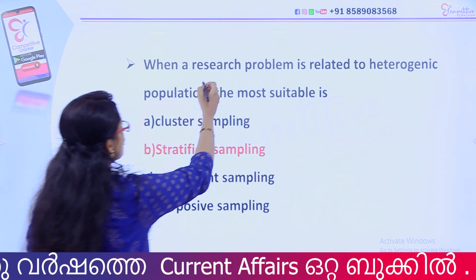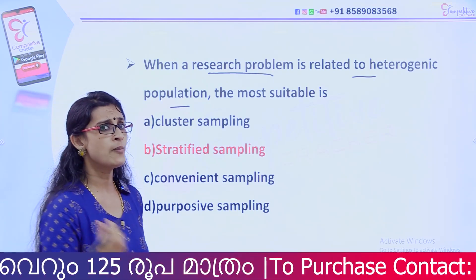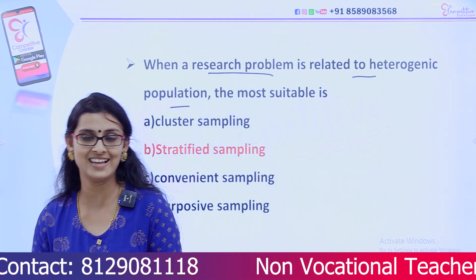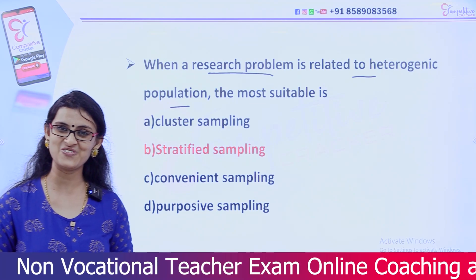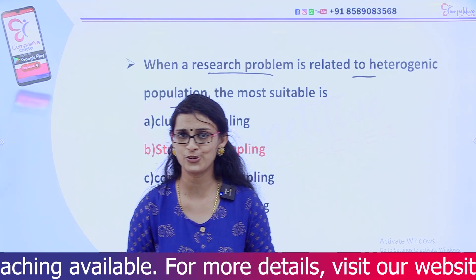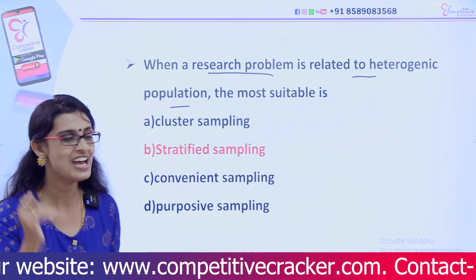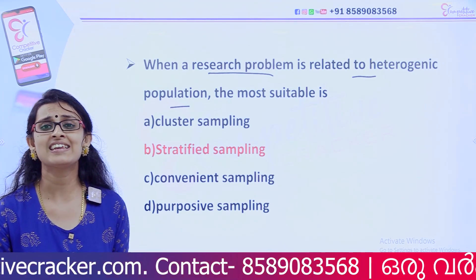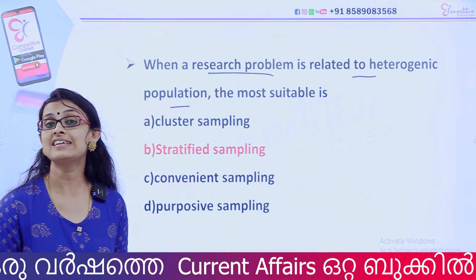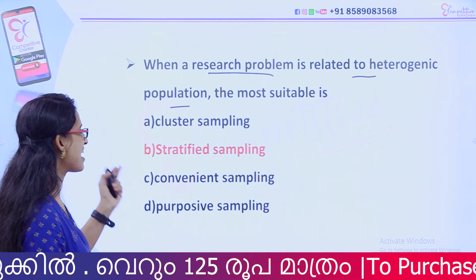Our research problem involves a heterogeneous population — that means different types of population units. When the units we are studying appear in different forms, we need a specific type of sampling. The answer is stratified sampling.